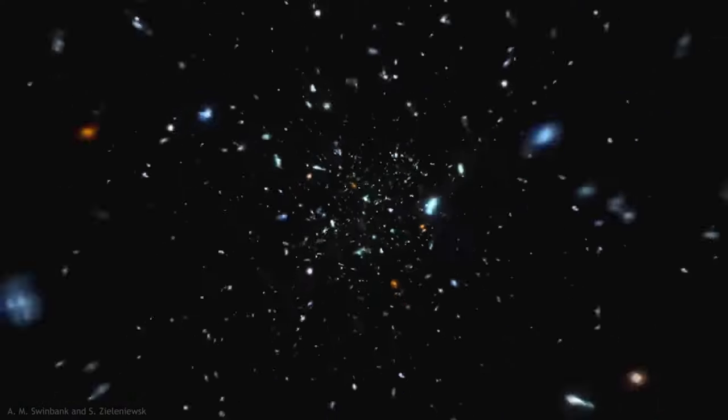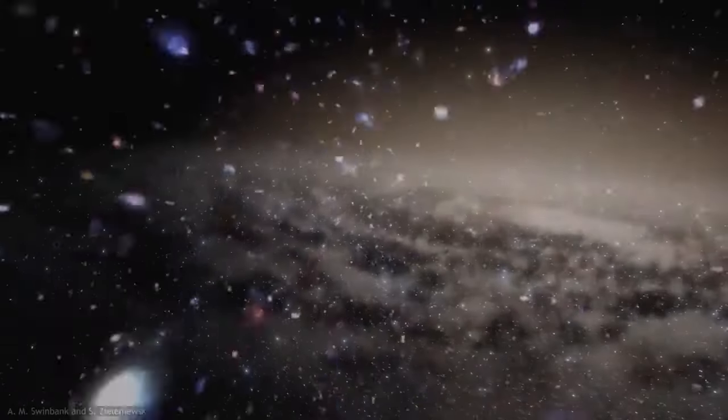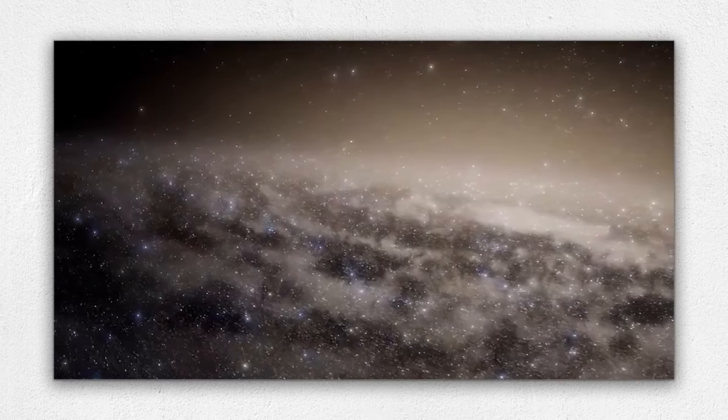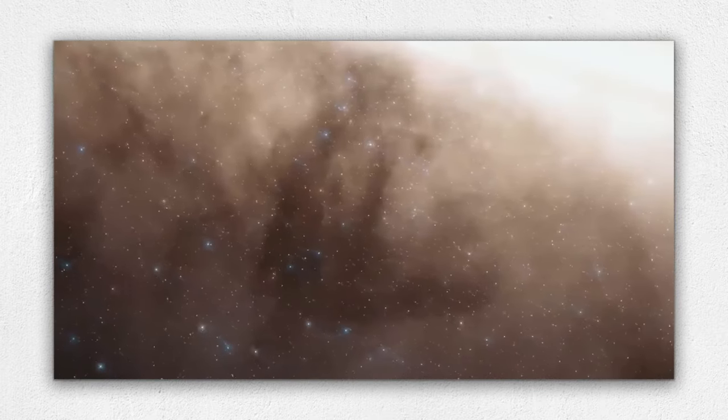Gupta proposes a cosmic compromise. He thinks we can blend this theory with our existing idea of an expanding universe, creating a sort of hybrid explanation for the redshift phenomenon.